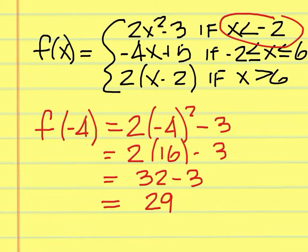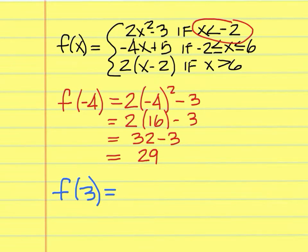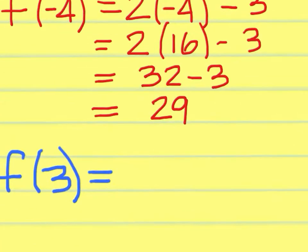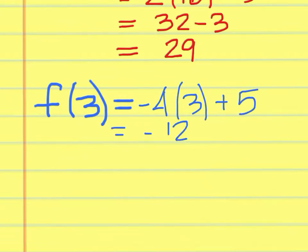Now, in some of these problems you can have more than one function to evaluate. For example, from the same set of parameters, you could also find f of 3. f of 3 pertains to the second function, because 3 is between negative 2 and 6. So you would be doing negative 4x plus 5: negative 4 times 3 plus 5, that is negative 12 plus 5, which is negative 7.